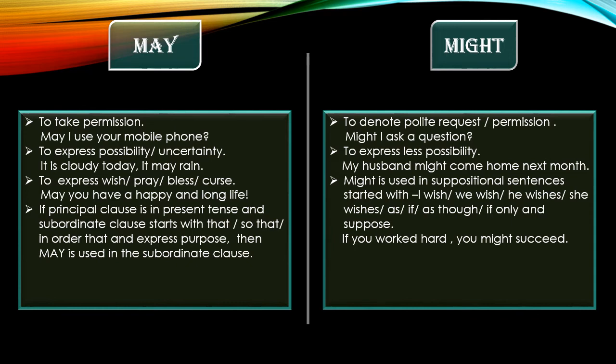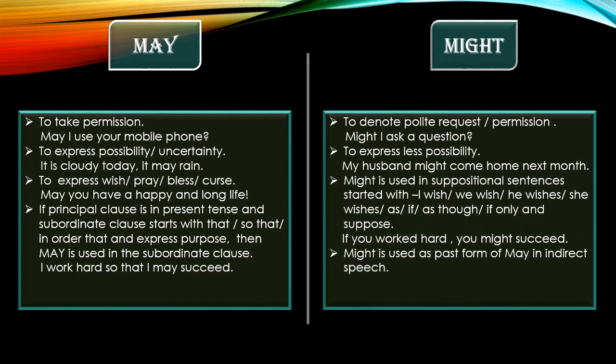When the principal clause is in present tense and the subordinate clause starts with 'that,' 'so that,' or 'in order that' to express purpose, then 'may' is used in the subordinate clause. For example: 'I worked hard so that I may succeed.' Might is also used as the past form of 'may' in indirect speech.